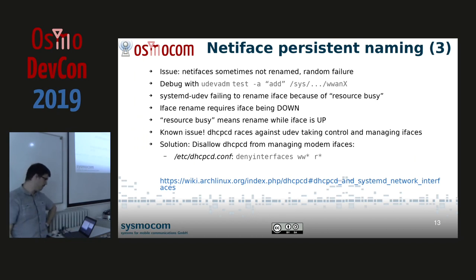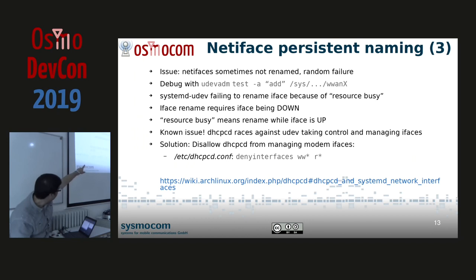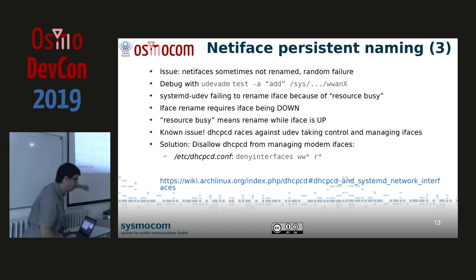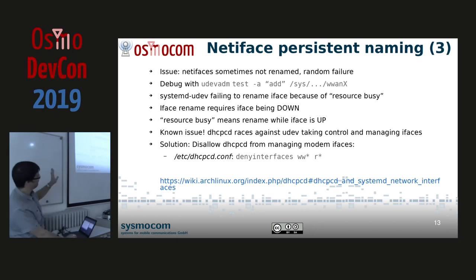The solution is to tell DHCP-CD not to use these kinds of interfaces, by adding a configuration entry that says: don't handle interfaces starting with 'ww' or 'r', which match our prefixes. With that, we have persistent interfaces and the issue is fixed.